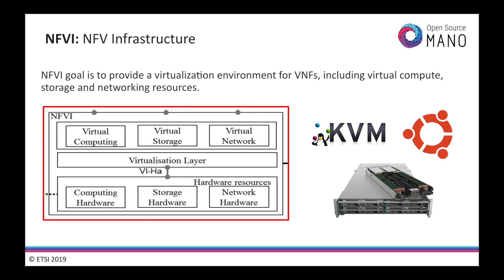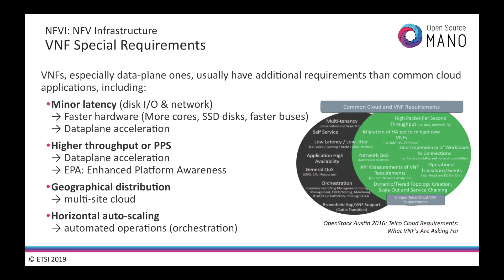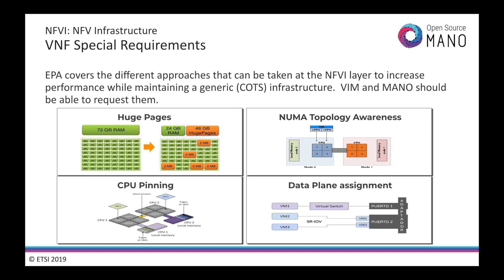The NFV infrastructure should be generic hardware and software that enables virtualization. However, VNFs — mainly data plane ones — may require this hardware to perform strongly by delivering low latency, higher throughput, and so on. So instead of introducing hardware accelerators that would make it difficult to fulfill the NFV vision of using generic compute nodes, a number of techniques were developed by the industry. These techniques, commonly grouped under the name of Enhanced Platform Awareness or EPA, implement a better use of resources that allow virtual instances to perform better.